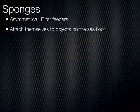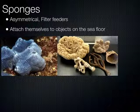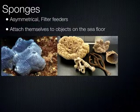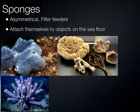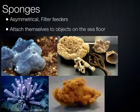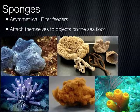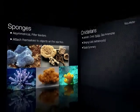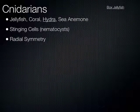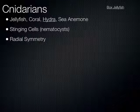Sponges are the simplest animals — filter feeders. They have cells but no real tissue, no organs or organ systems. Very, very simple. Most of them live in the ocean and attach to objects, filtering water as it goes by.